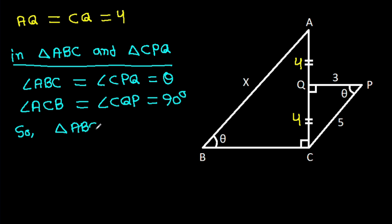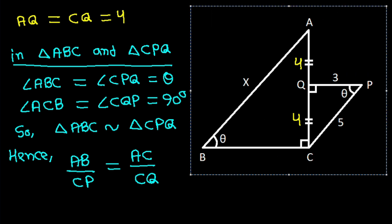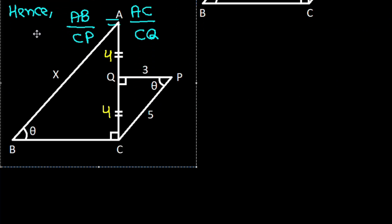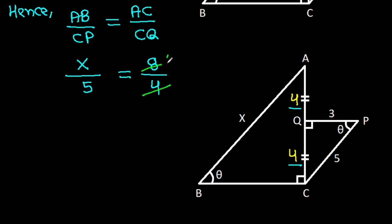Triangle ABC is similar to triangle CPQ. Hence, AB over CP equals AC over CQ. AB is X, CP is 5, and AC is 4 plus 4, that will be 8. CQ is 4, so 8 over 4 is 2. Therefore, X over 5 equals 2.